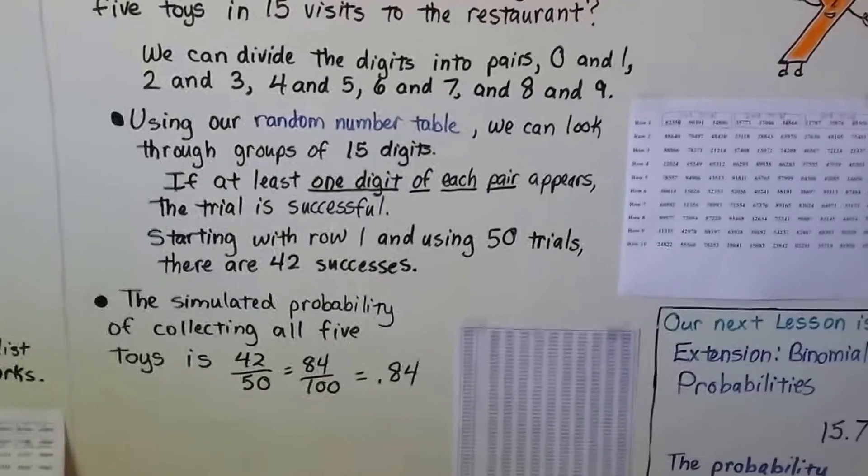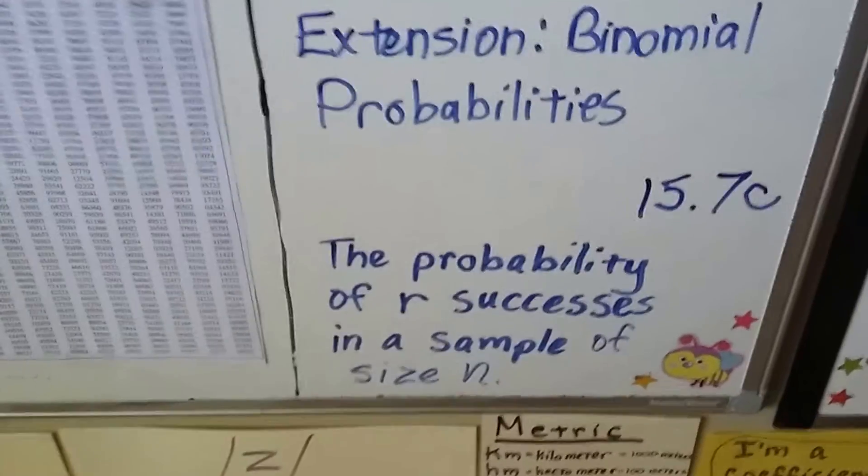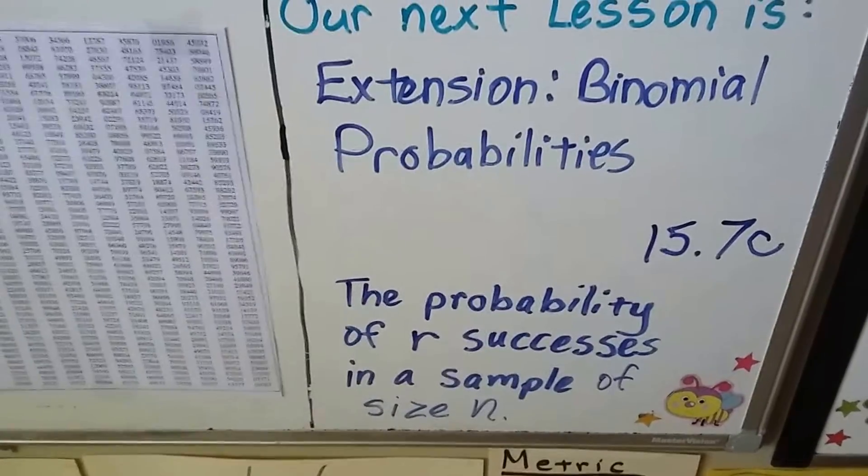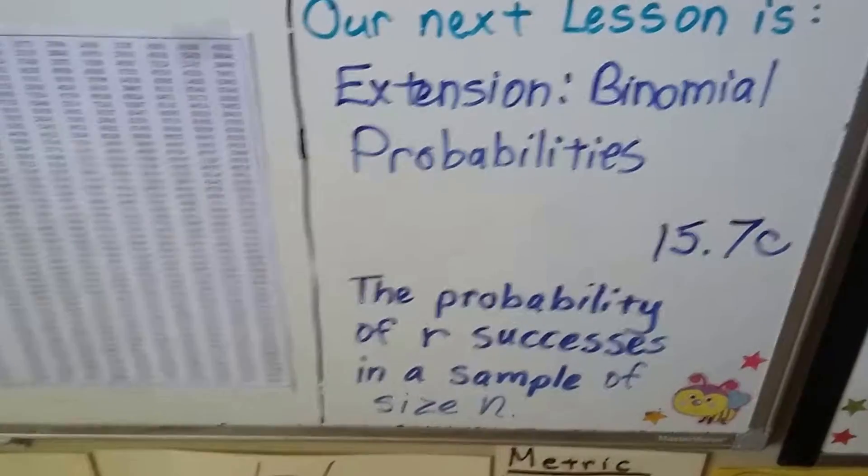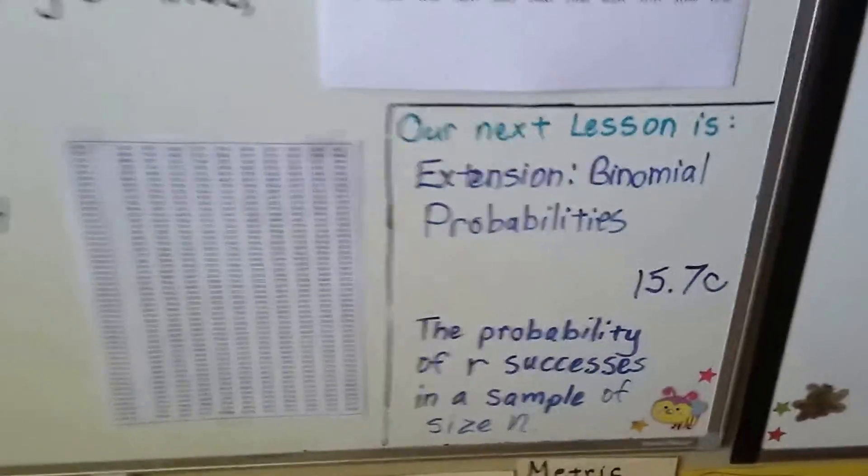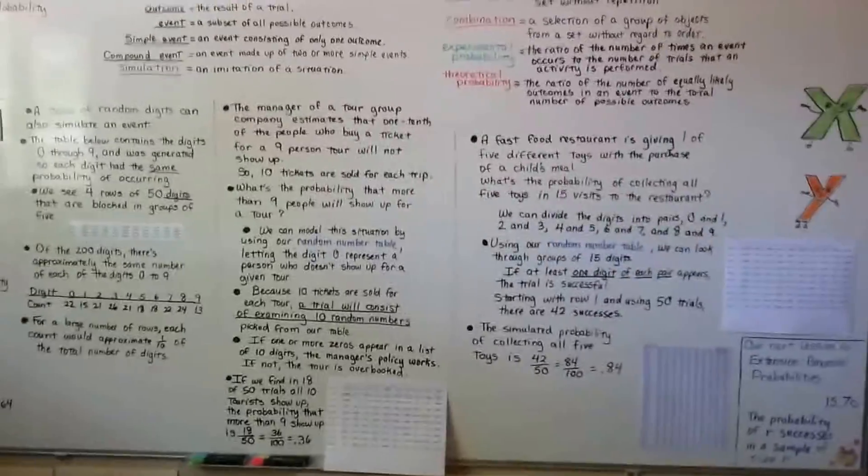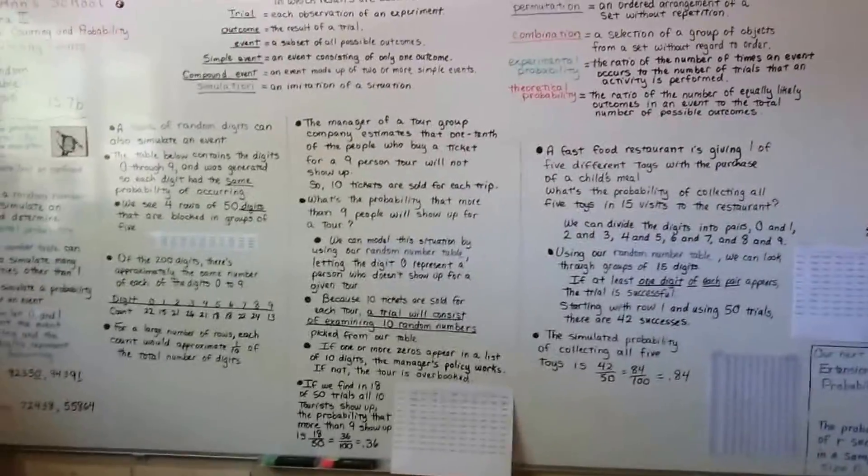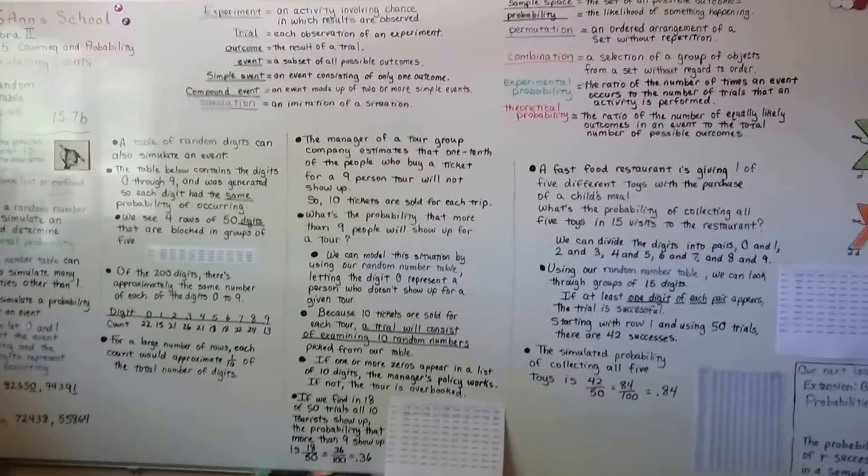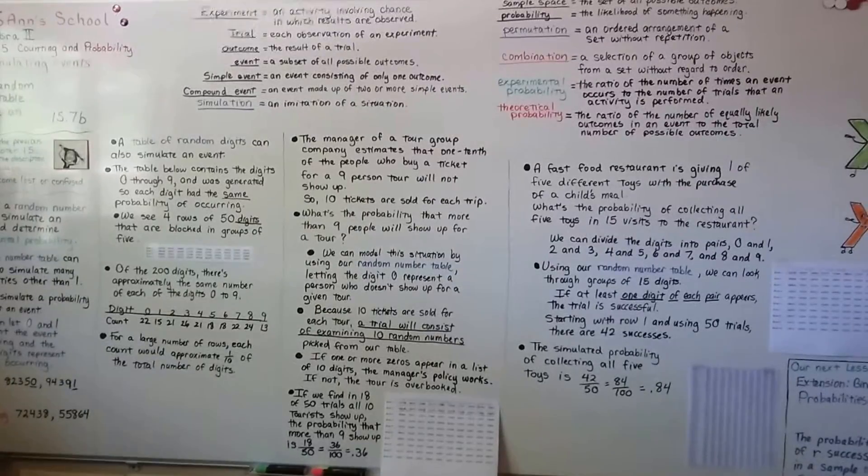So that's how we can use a random number table. Our next video is extension binomial probabilities, 15.7c. And we're going to do the probability of r successes in a sample of size n. So you could probably find a table of random numbers online, or you might find one in the back of your math book. But it's very useful. I'll see you next time. Bye bye.